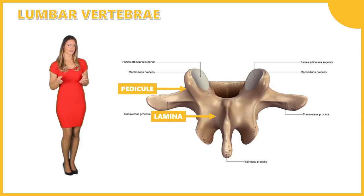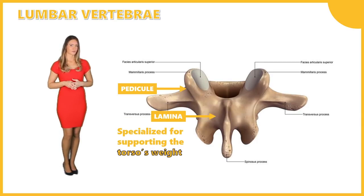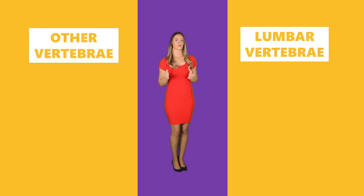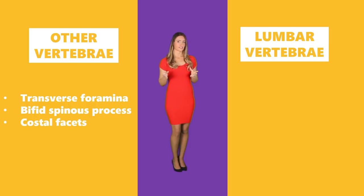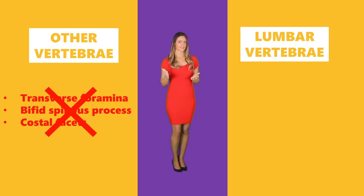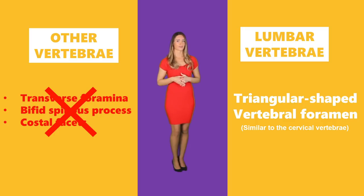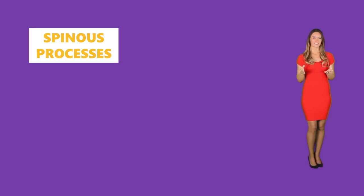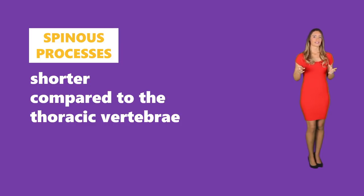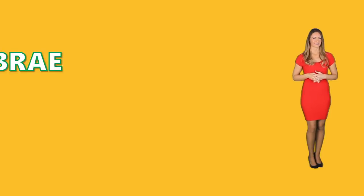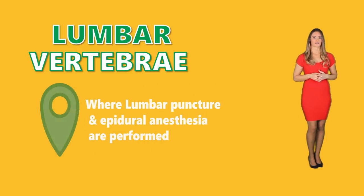Unlike other vertebrae, the lumbar vertebrae do not have the following structures: they do not have a transverse foramina, a bifid spinous process, or costal facets. Similar to the cervical vertebrae, the lumbar vertebrae do have a triangular-shaped vertebral foramen. When it comes to their spinous processes, the lumbar vertebral spinous processes are shorter compared to the thoracic vertebrae and do not extend below the vertebral body. The lumbar vertebrae is usually where spinal procedures like lumbar punctures and epidural anesthesia are performed.